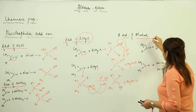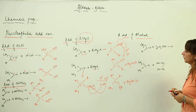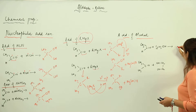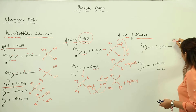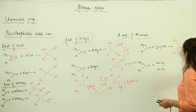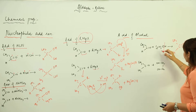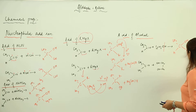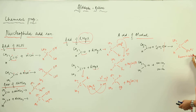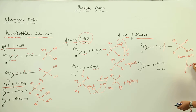Now we are going to add alcohol. When we add alcohol to this aldehyde, a similar reaction takes place. It will form CH3 with C double bond O, and it will break like this giving OH and OC2H5. This intermediate compound is called hemiacetal.